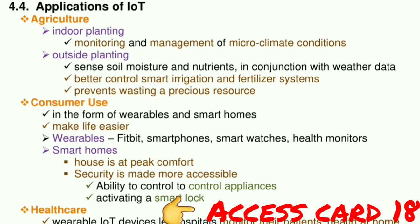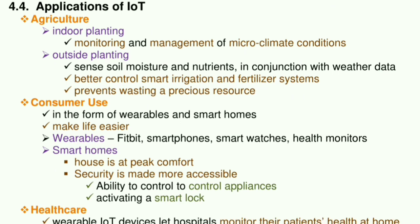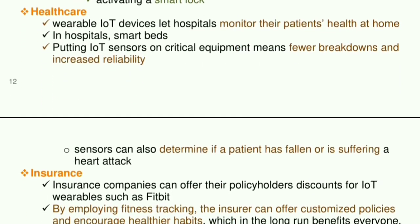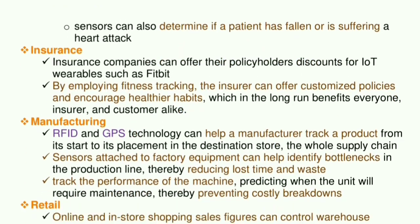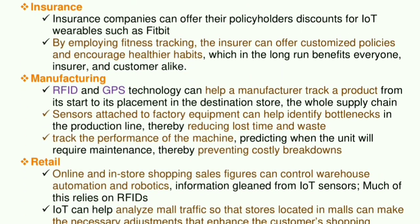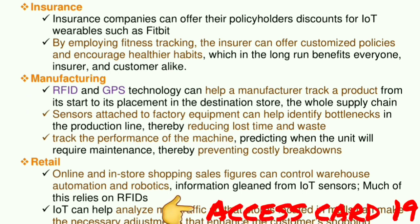Health monitors and smart homes keep houses at peak comfort; security is made more accessible with the ability to control appliances and activate smart locks. Healthcare: wearable IoT devices let hospitals monitor their patients' health at home. In hospitals, smart beds and IoT sensors on critical equipment mean fewer breakdowns and increased reliability. Sensors can also determine if a patient has fallen or is suffering a heart attack. Insurance companies can offer policyholders discounts for IoT wearables such as Fitbit; by employing fitness tracking, insurers can offer customized policies and encourage healthier habits, benefiting both insurer and customer.